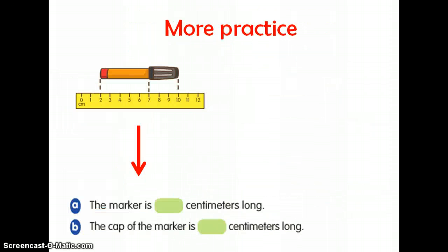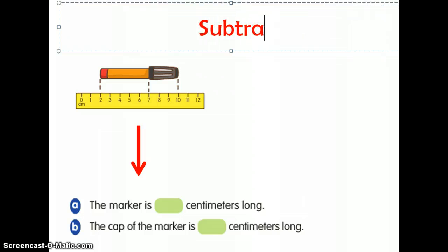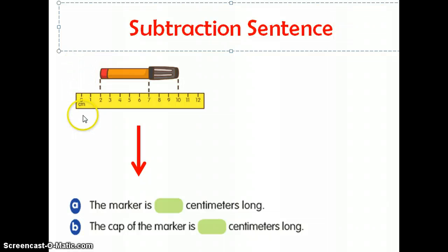You're going to do the next example on your own. Please take out your small math notebook. And at the top, I actually want you to write subtraction sentence. And go ahead and draw a picture of this. We have a ruler that measures from zero to twelve. And then you're going to draw the marker. And notice, again, that they did not start at zero. They started at two. And the marker ends at ten.